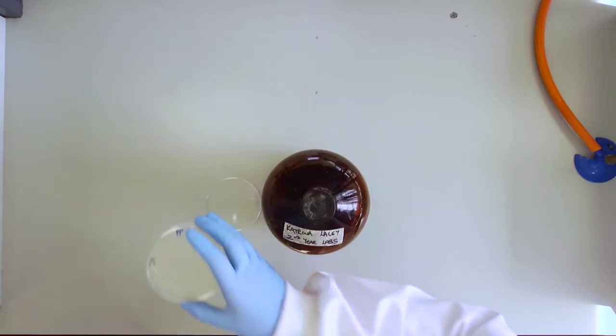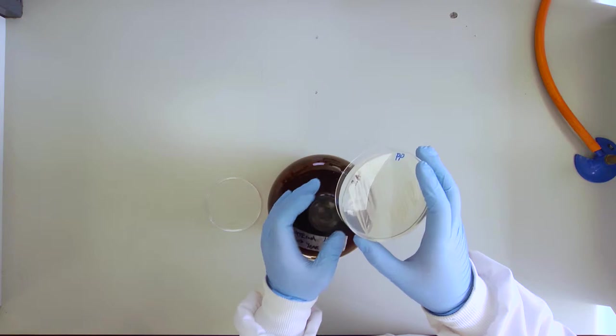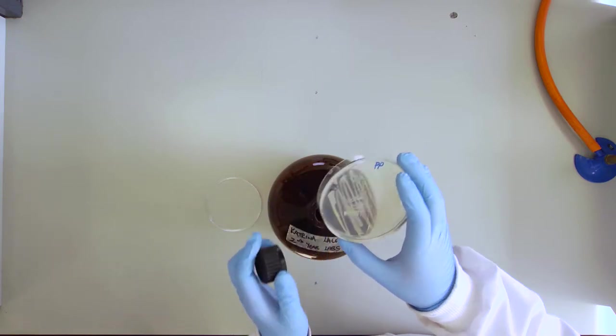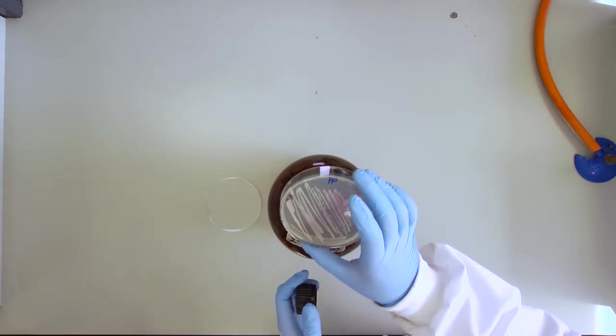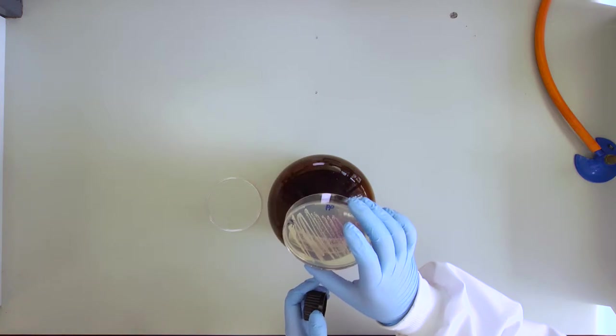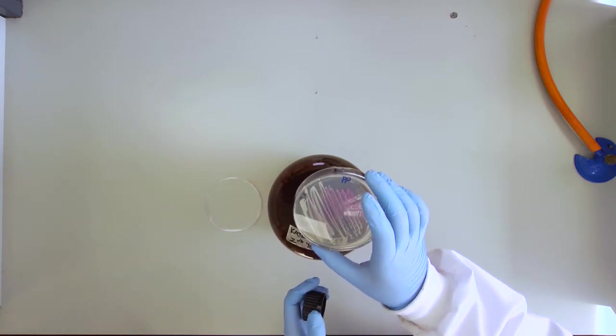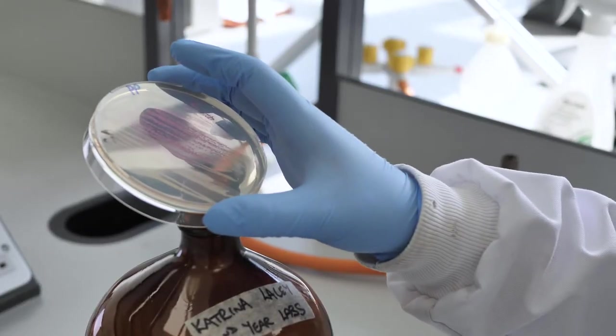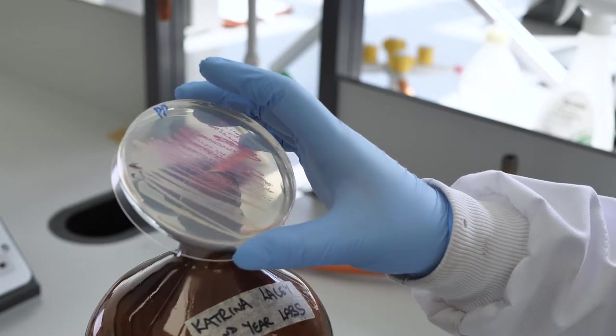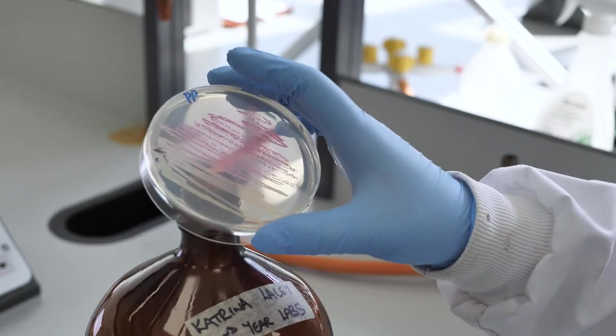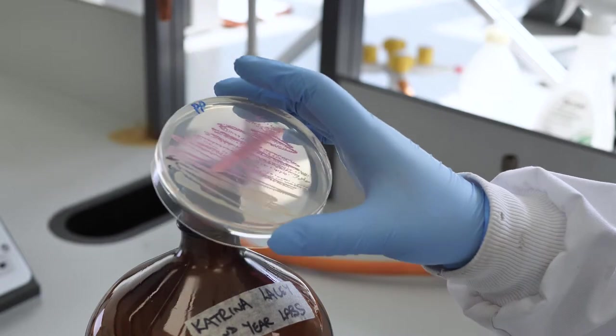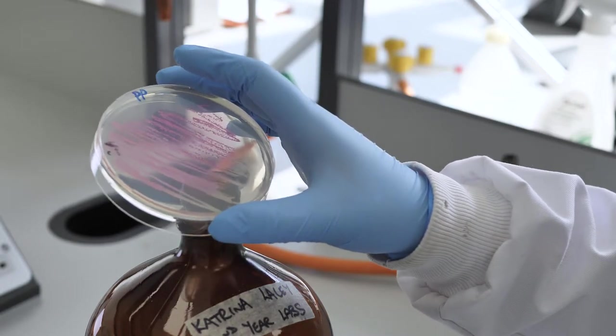To test if the bacterium is positive or negative for the enzyme phosphatase, hold the open plate of colonies grown on the phenolphthalein medium over a bottle of ammonia in a well ventilated area. If free phenolphthalein has been released by phosphatase action,